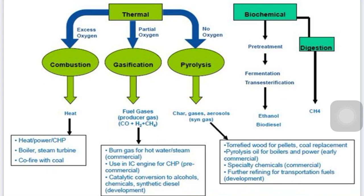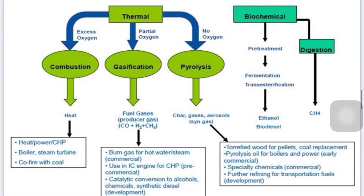Anaerobic digestion is a biological treatment process where organic material is treated and the output biogas is rich in methane. The biogas can be cleaned and converted into heat and ultimately electricity. Regarding synthetic gas — SNG — it is a fuel gas consisting primarily of hydrogen, carbon monoxide, and often some carbon dioxide. The name comes from its use as an intermediate in creating synthetic natural gas (SNG) and for producing ammonia or methanol.